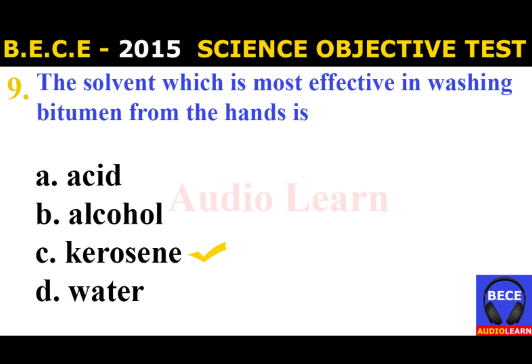Number 9: The solvent which is most effective in washing bitumen from the hand is A. Acid, B. Alcohol, C. Kerosene, D. Water. The answer is C. Kerosene. The solvent which is most effective in washing bitumen from the hand is kerosene.